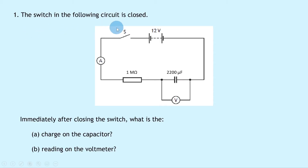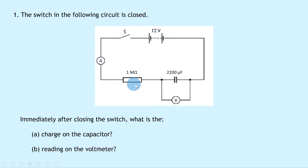Question one says that the switch in the following circuit is closed. We've got a switch, a 12 volt battery, an ammeter in series with a 1 megaohm resistor and a 2200 microfarad capacitor, and a voltmeter in parallel with the capacitor.